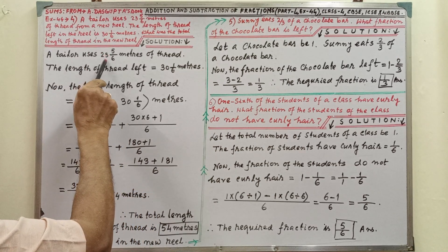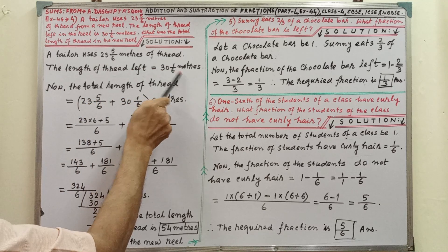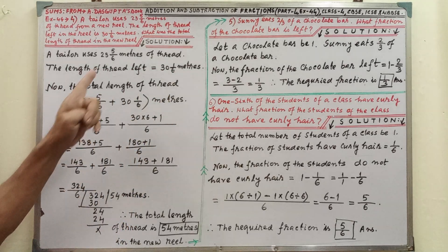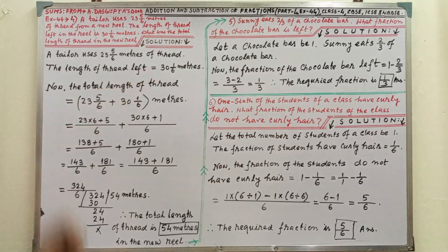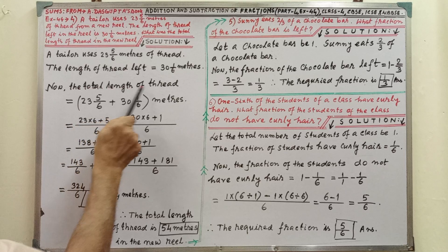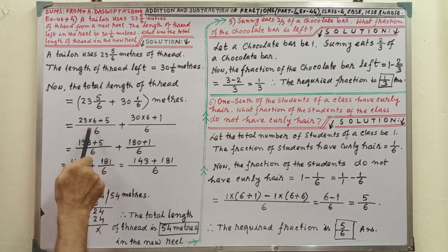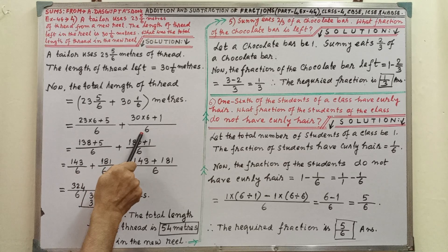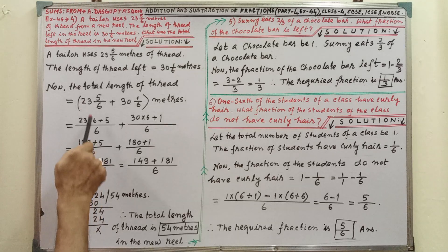Now pay your attention on the solution. A tailor uses this meters of thread and the length of the thread left equal to this meter. Therefore, first uses this, then left this, then total. Total this plus this. Now the total length of the thread, this plus this meters. And how you have to do this part, that you have already seen in the previous period.